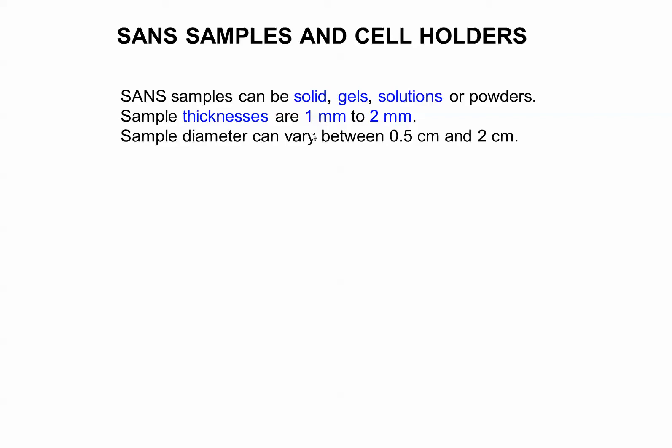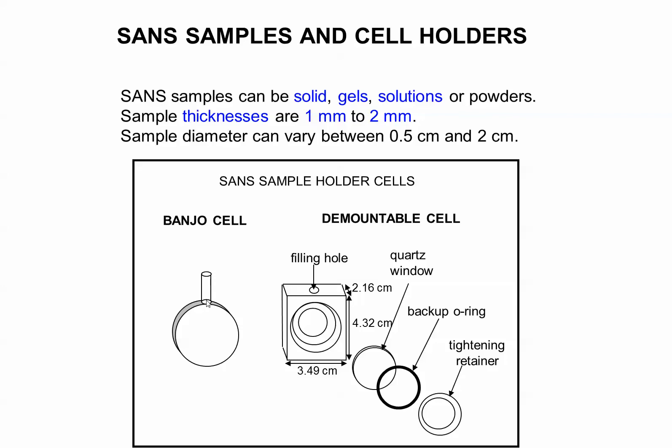SANS samples and cell holders. Samples could be solid gels or solution thicknesses, one millimeter or two millimeter. If using deuterated solvent, for example, would be two millimeter. If you're using hydrogenated solvent, it would be one millimeter.